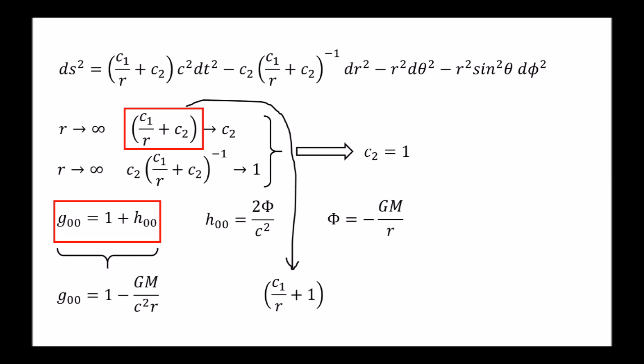Comparing these two expressions, we see that C1 must be this, where G is Newton's gravitational constant, and M the mass of the object.